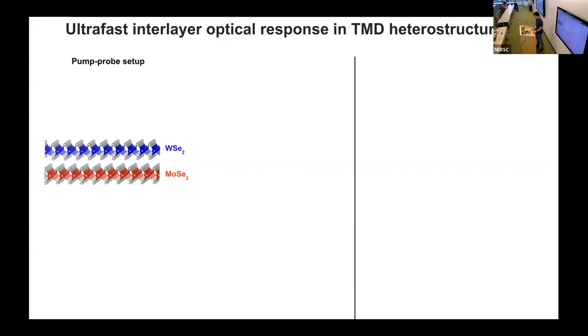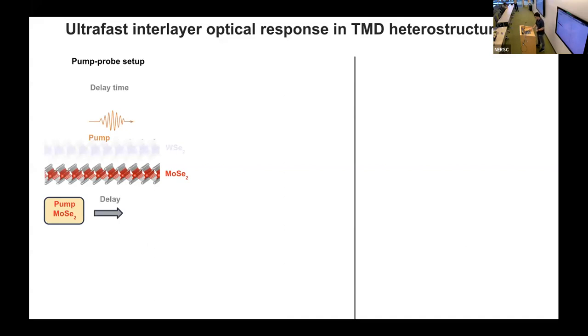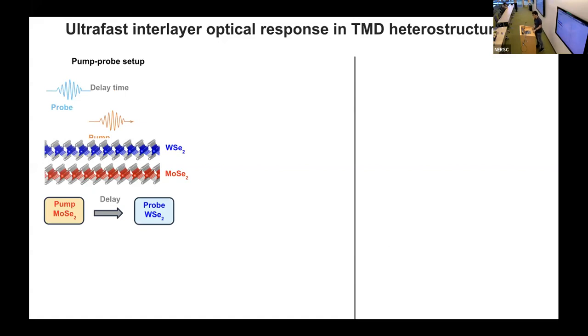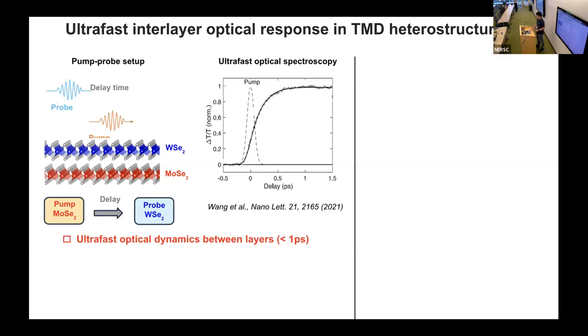We follow a classical setup called the pump-probe setup: we first pump one layer, the Molybdenum Diselenide layer, and after some time delay we probe another layer, the Tungsten Diselenide layer. The probe signal gives us the response and dynamics between these two layers. Experimentalists use ultrafast optical spectroscopy to measure this interlayer optical dynamics.